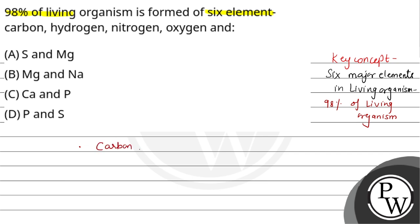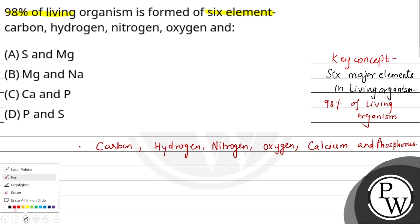What are these elements? Carbon, Hydrogen, Nitrogen, Oxygen, Calcium and Phosphorus. These are the 6 main elements that form any living organism.